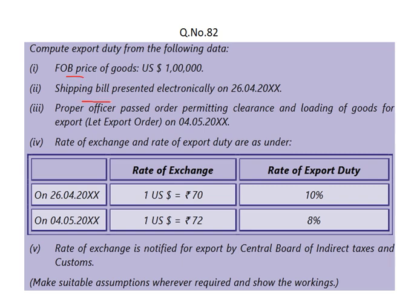Shipping bill is presented electronically on the 26th date. Then the proper officer said that the date is 4th May. Out of these 2 dates you have to take 1 date. So the bill presented date is 26th April, so you should take 26th April here because the bill date is 26th - that date is taken.